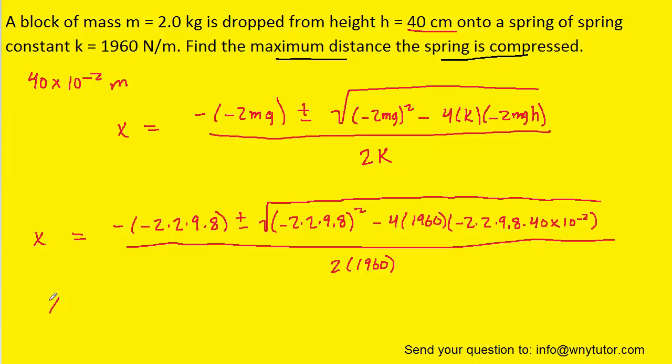And when you simplify that carefully on your calculator, you should get two values. One value turns out to be 0.1 meters, and the other value is negative 0.08 meters. We will keep only the positive root for our answer, so we can reject the negative root, and the answer therefore becomes 0.10 meters.